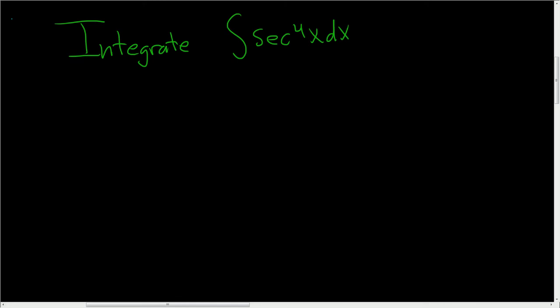Integrate secant to the fourth power of x. We have a secant function being raised to an even power, so what we'll do is save a copy of secant squared. This will be secant squared x, secant squared x dx.